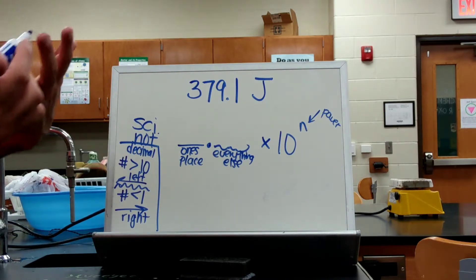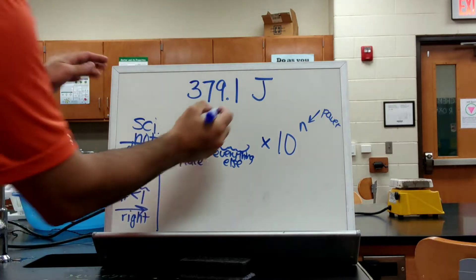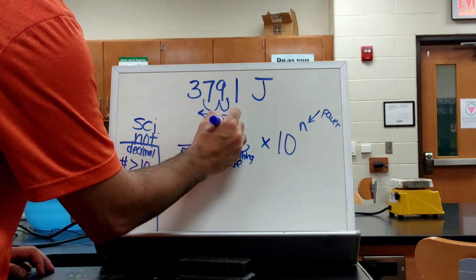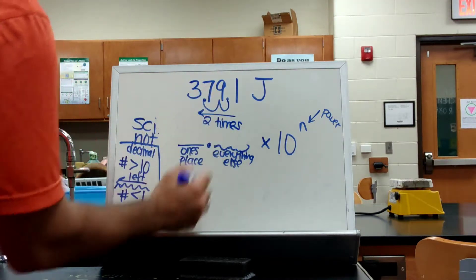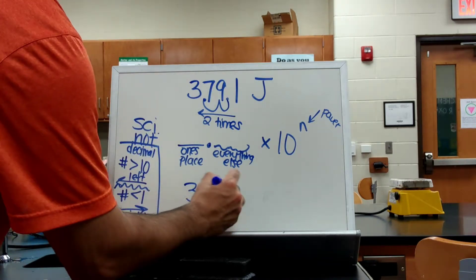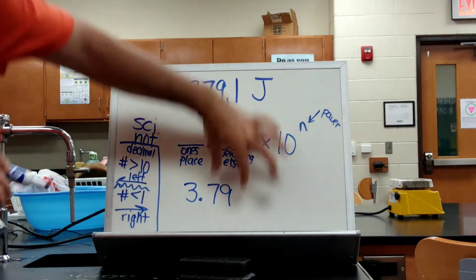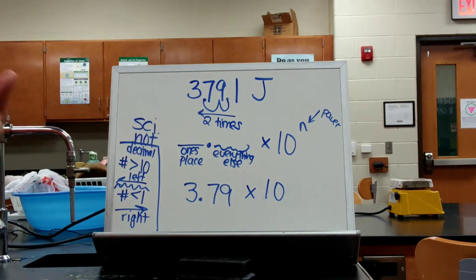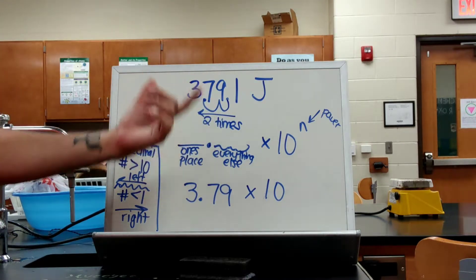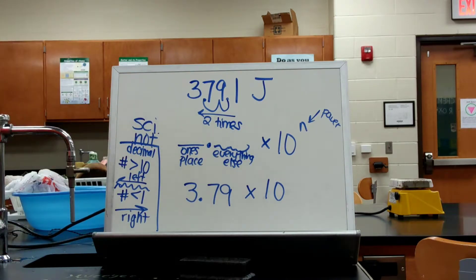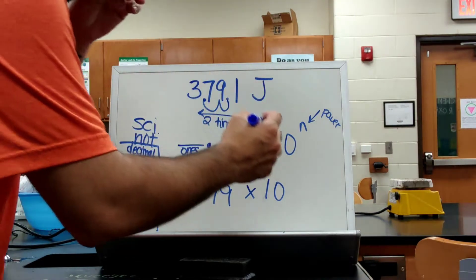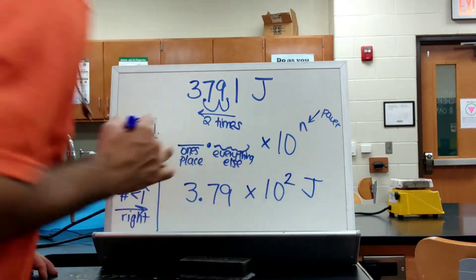This is a number that's greater than 10, so I'm going to move the decimal to the left — however long it takes me to get a number in the ones place, where I have a number then the decimal point. One, two — I move this to the left two times. So I'm going to rewrite this number as 3.791: ones place, everything else, times ten to the... I moved it to the left two times. I made my number smaller, but it's a large number. So I should have a positive exponent: times ten to the second joule.